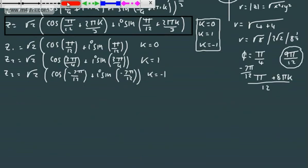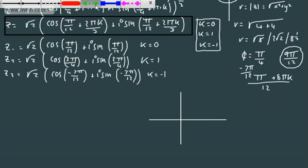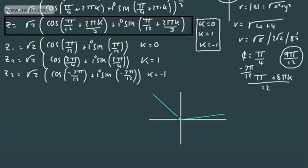Often you might be asked to put these on an Argand diagram, which is going to be no bother at all. We can just put these up here. So one of them, let's do the first one, π by 12, is going to look something like that. That looks about π by 12, give or take. Then the next one, 3π by 4, so nice and straightforward, 3π by 4.